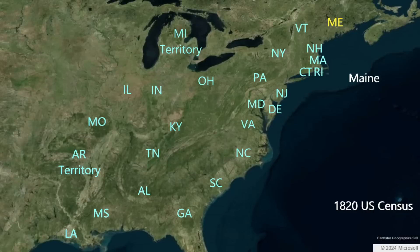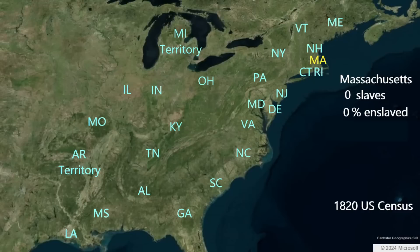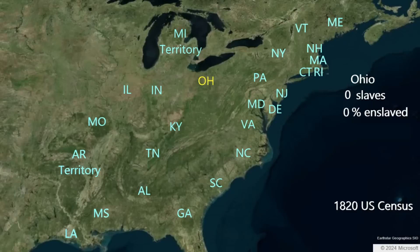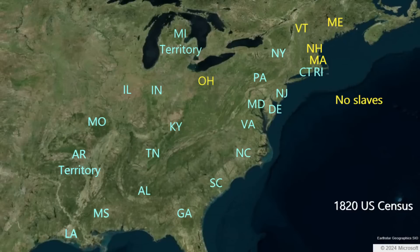We will go in order from least enslaved states to the most enslaved. The new state of Maine, following the tradition of its parent state Massachusetts, had no slaves in 1820, with 928 free African Americans. Massachusetts had no slaves and 6,740 free African Americans. New Hampshire had no slaves and 786 free African Americans. Vermont likewise had no slaves, with 903 free African Americans. Ohio had zero slaves in accordance with the Northwest Territory legislation, and recorded 4,700 free African Americans. So five states — Maine, Massachusetts, New Hampshire, Vermont, and Ohio — had zero slaves in 1820.